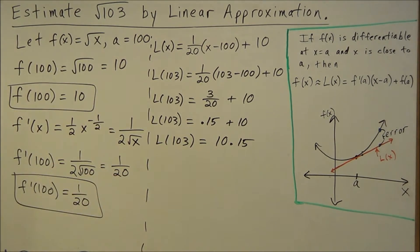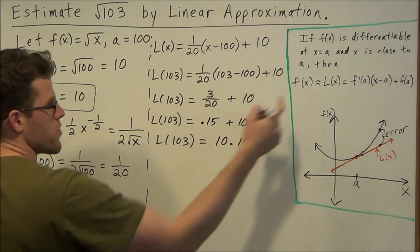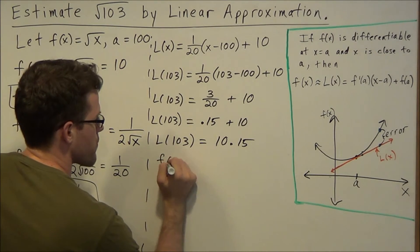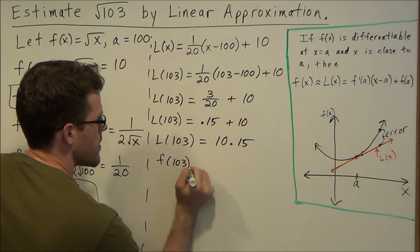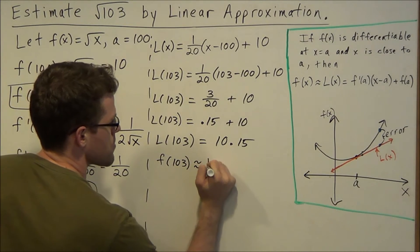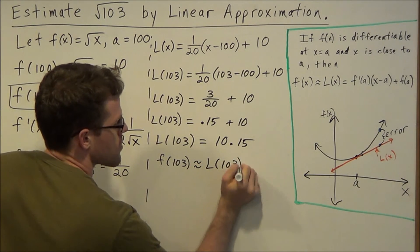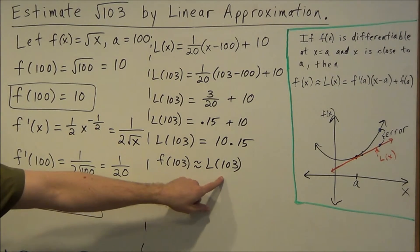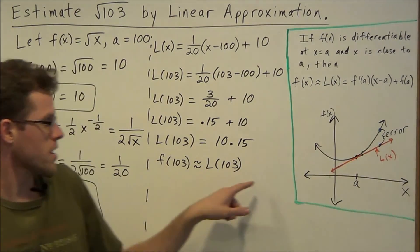so then to complete this or write it out formally, remember we are using this idea that the function value at 103 is approximately equal to the value along the tangent line here. So our L(x) at 103.